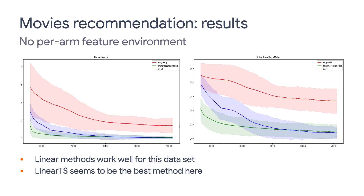To be fair, it's expected that linear algorithms do better than non-linear algorithms on this problem, as the problem is linear by the reward calculation's construction. As for the difference between the two linear algorithms, it seems that linear UCB struggles a little in the beginning, but in the long run, it runs slightly better than linear Thompson sampling.